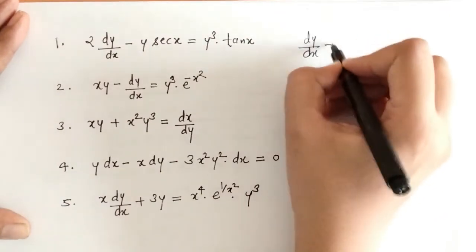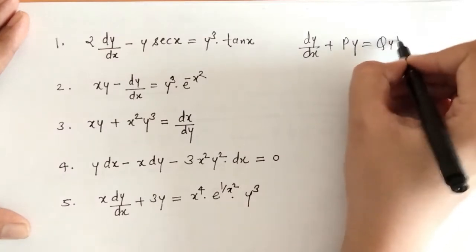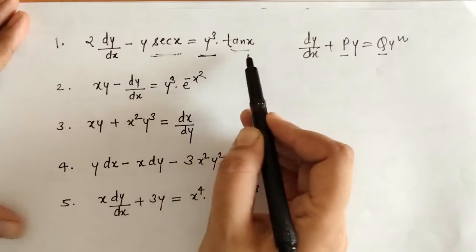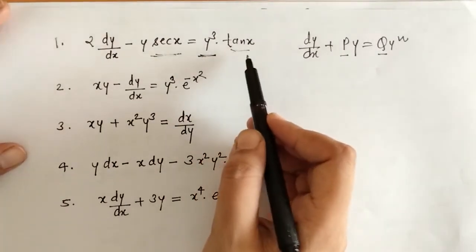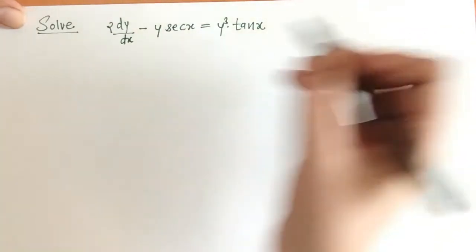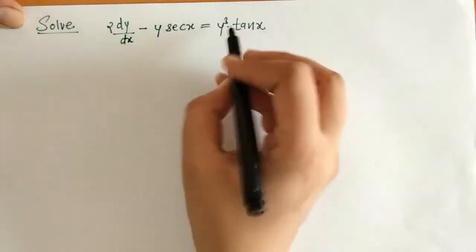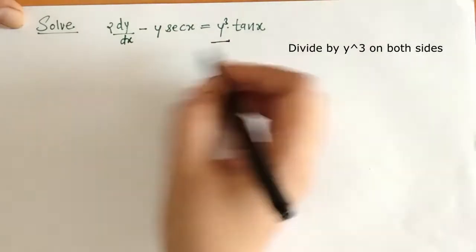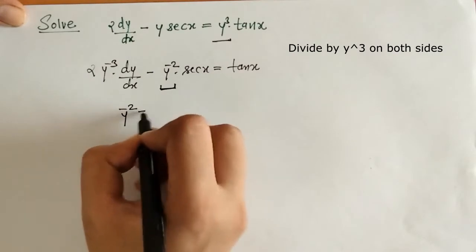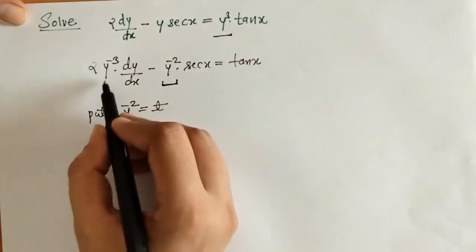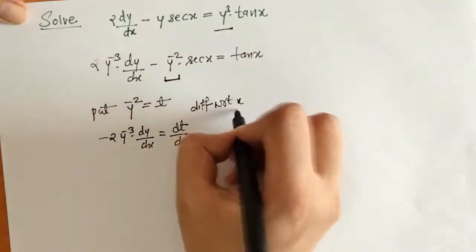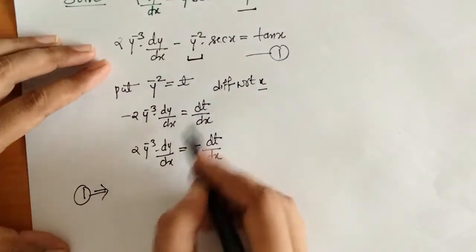We can check that all these examples are of the form dy/dx plus Py equals Q·y raised to n, where y raised to n is the extra factor and the remaining terms P and Q are functions of x. Now we are going to see how to solve these examples. We can check that this is a Bernoulli's differential equation. We will divide this differential equation on both sides by y cubed.